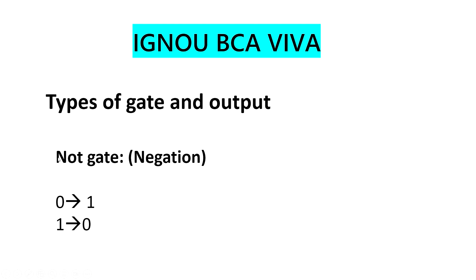What is a NOT gate? A proposition can also be stated as negation. If it is false, it will be true; if it is true, it will be false. In terms of binary: if it is 0, it will be 1, and if it is 1, it will be 0.